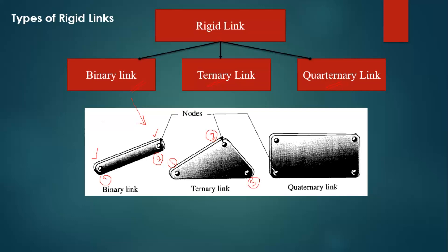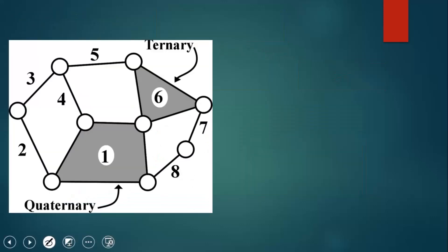Quaternary link is the link which has four nodes. Now let us discuss a practical problem. We have to find how many binary links, how many ternary links, and how many quaternary links are present.